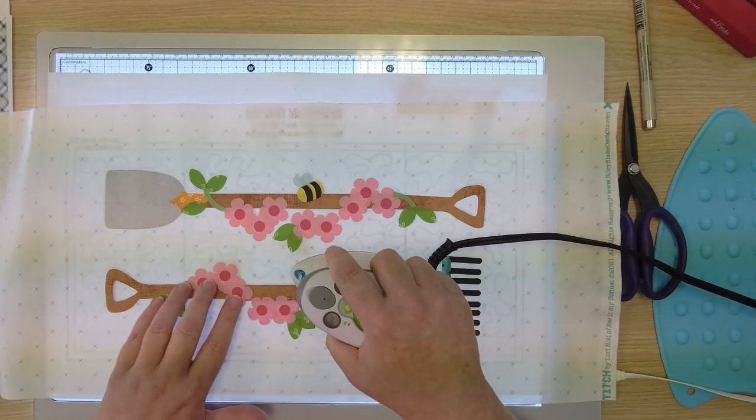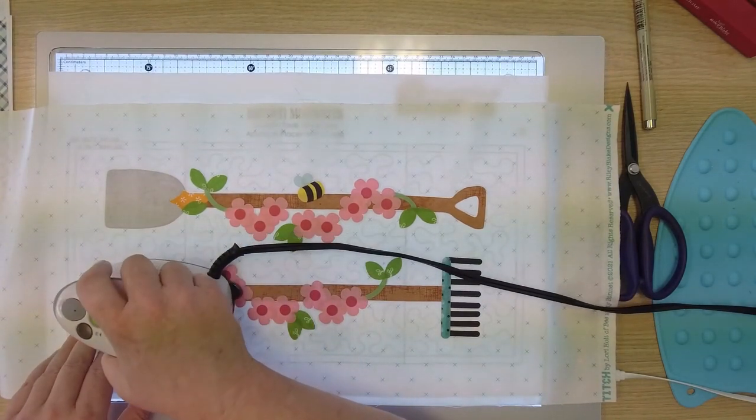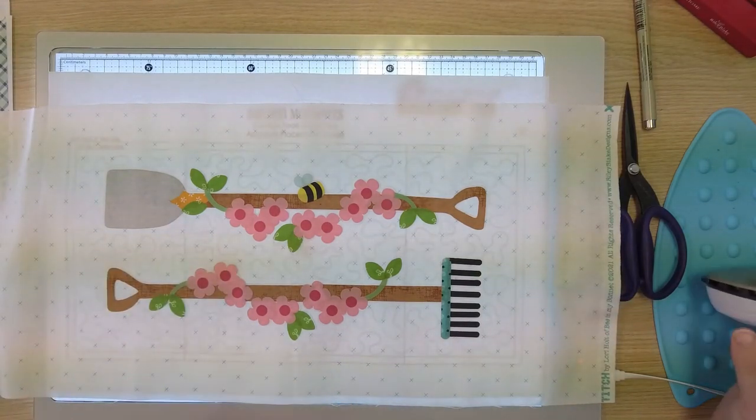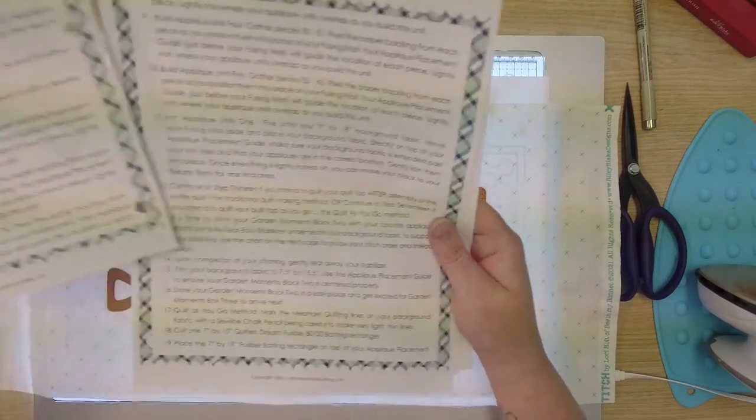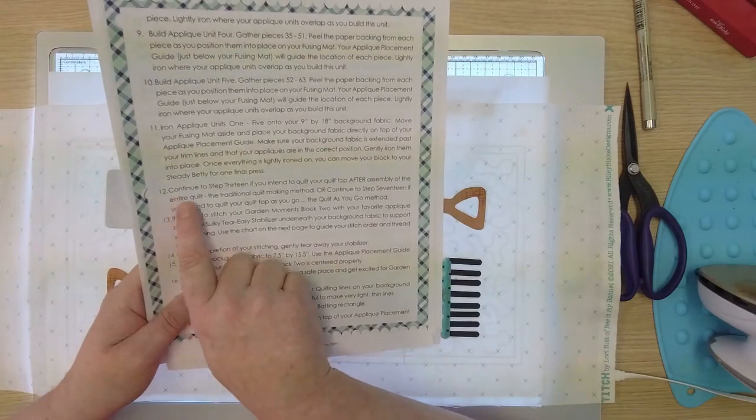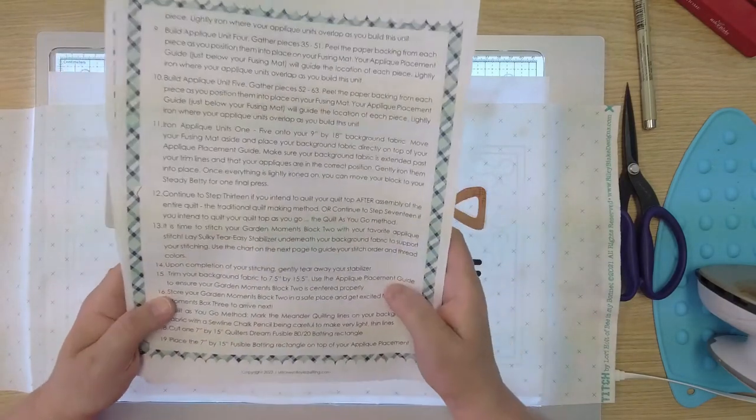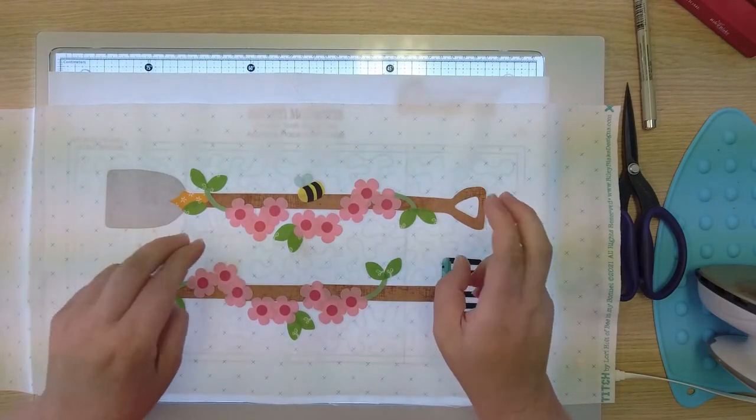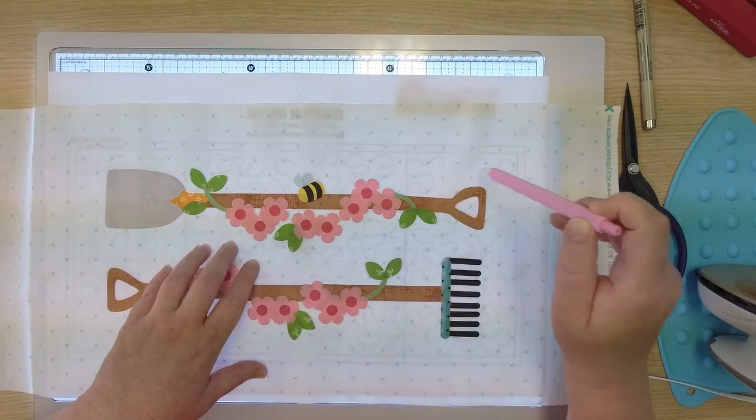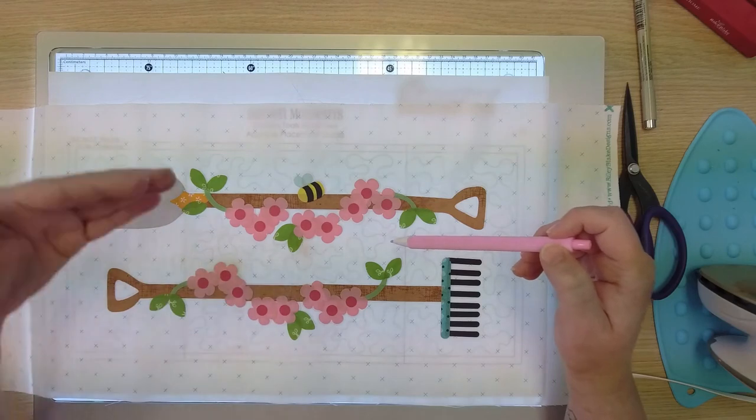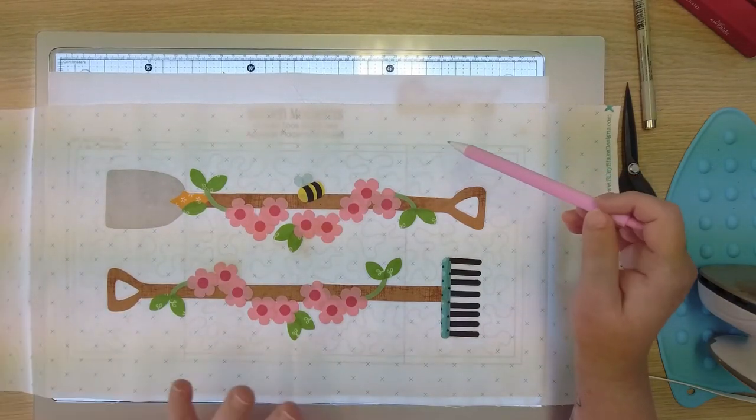Now there's two ways that you can continue here. You can put stabilizer under your fabric, sew your favorite applique stitch. Ours is the buttonhole stitch. And then at the end, once you have all of your blocks assembled at the end of the program, you will then quilt your quilt on a long arm or on your sewing machine. Or you can follow the quilt as you go instructions. So it's going to stop right here on number 12. It's going to tell you to continue to step 13 if you're going to quilt your quilt after assembly, or if you want to do the quilt as you go, you're going to jump to step 17.